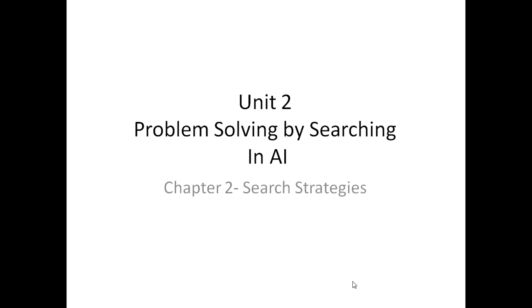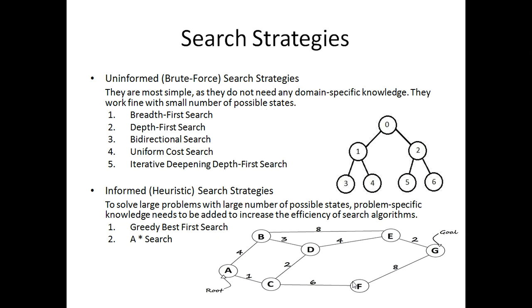Welcome to our second chapter on search strategies, unit 2: problem solving by searching in artificial intelligence. In this chapter we are going to understand what different search strategies we could follow for finding a specific solution to a problem. If you haven't understood the concept of state space or how the searching process is performed in AI, it is recommended to study chapter one first.